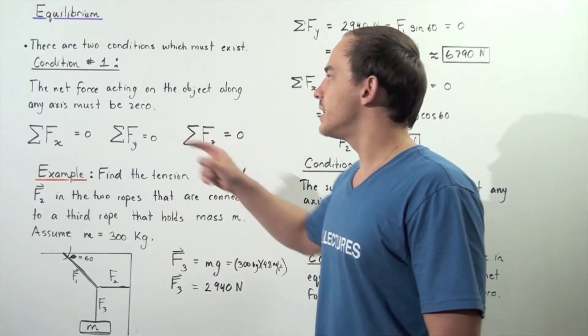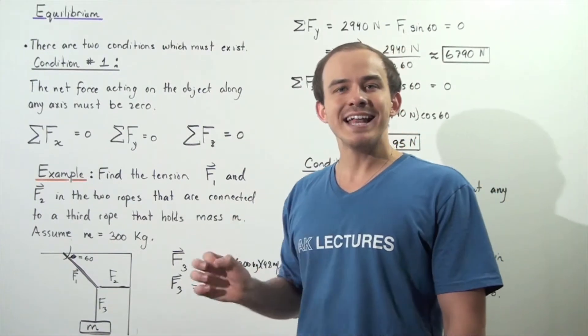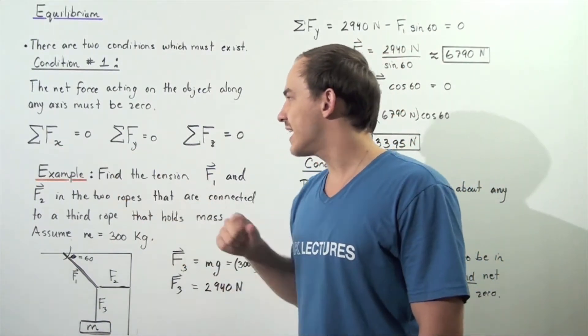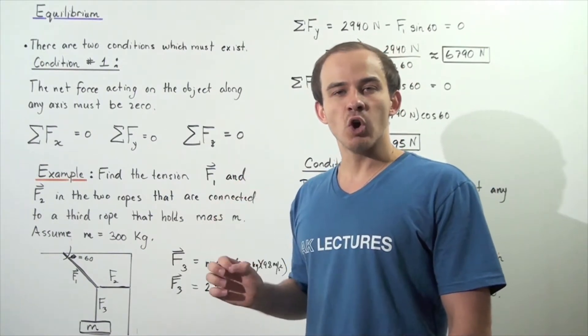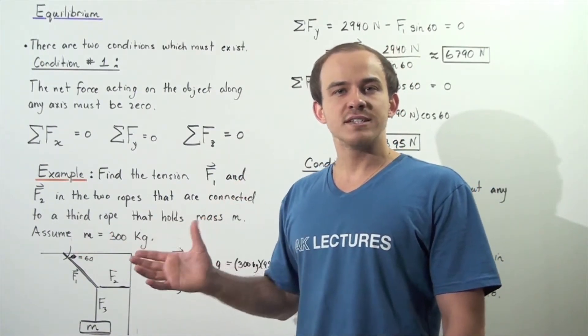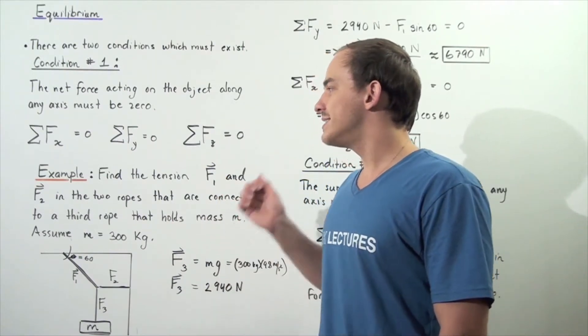So two conditions are required for an object to be in static equilibrium. Condition number one: the net force acting on the object along any axis, along the x-axis, y-axis, and z-axis must be zero. The sum of all the forces acting on the object along any axis must be zero.